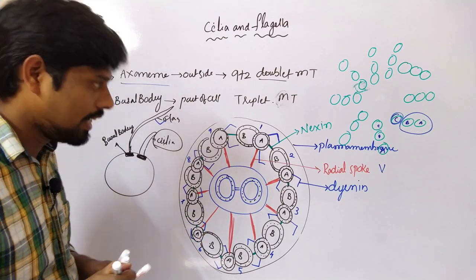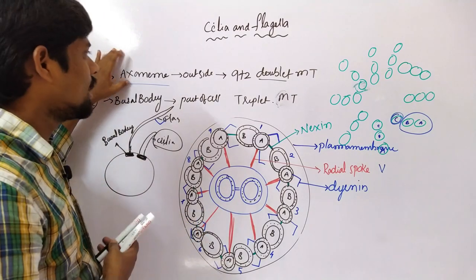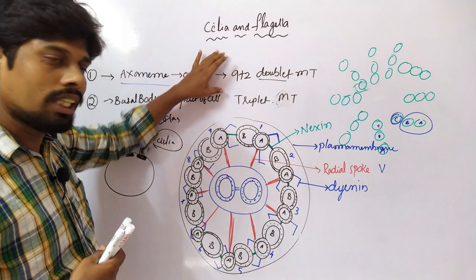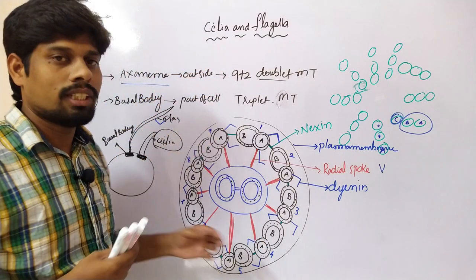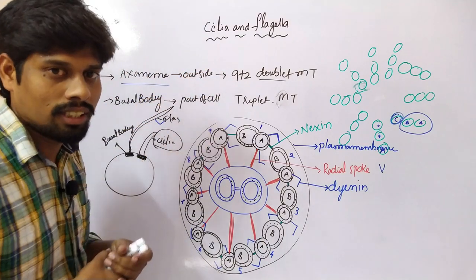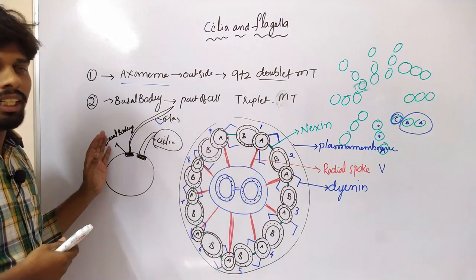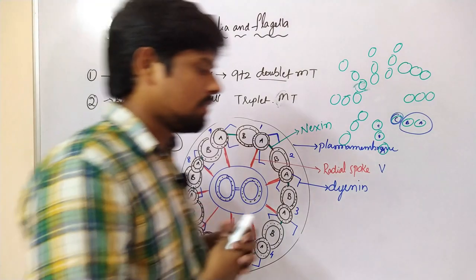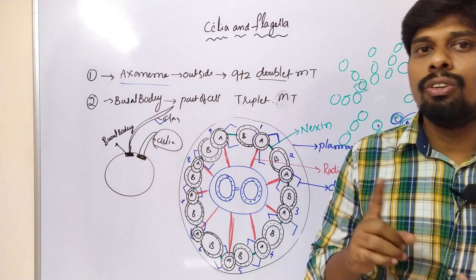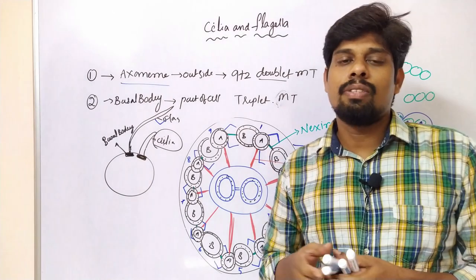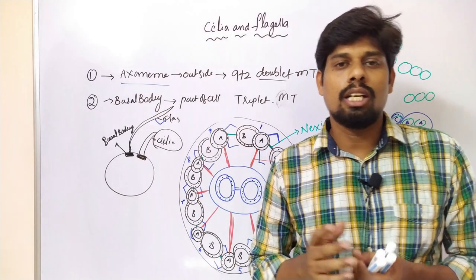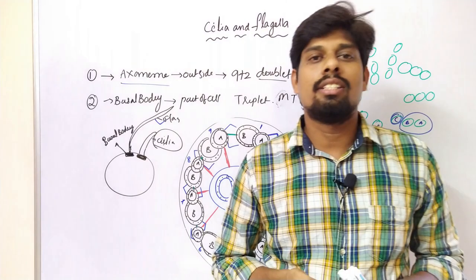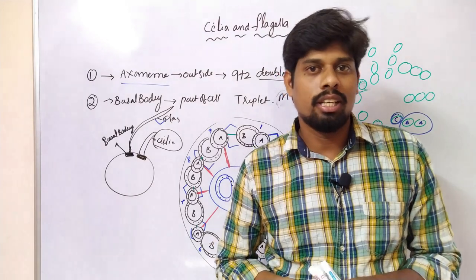In this way, the basal body and axoneme form the complete structure of cilia and flagella. I hope this is very clear to understand. If you really like this video, please subscribe to my channel HSR Bio Info. Don't forget to like, share, and comment. Thank you.